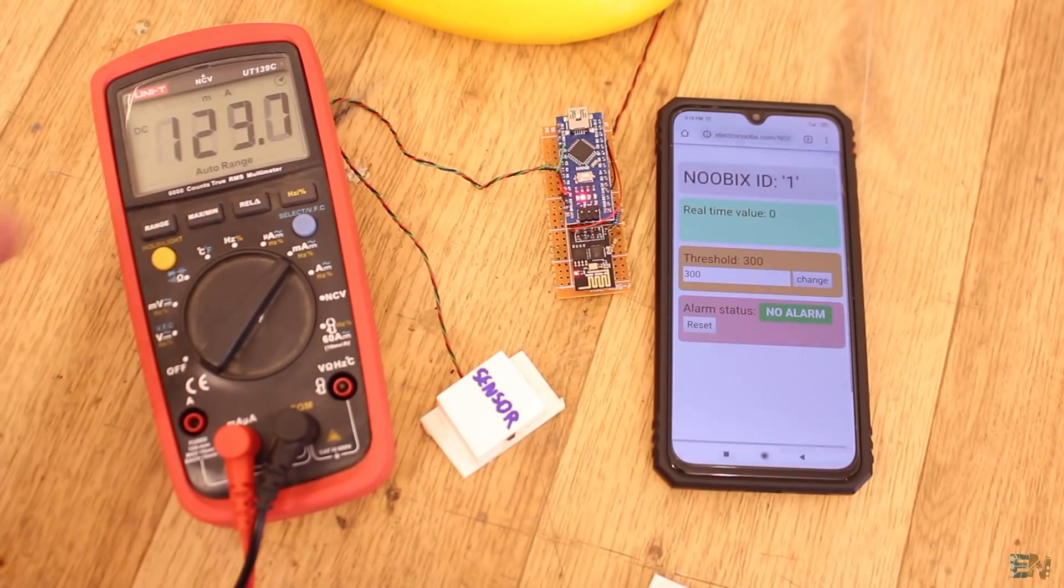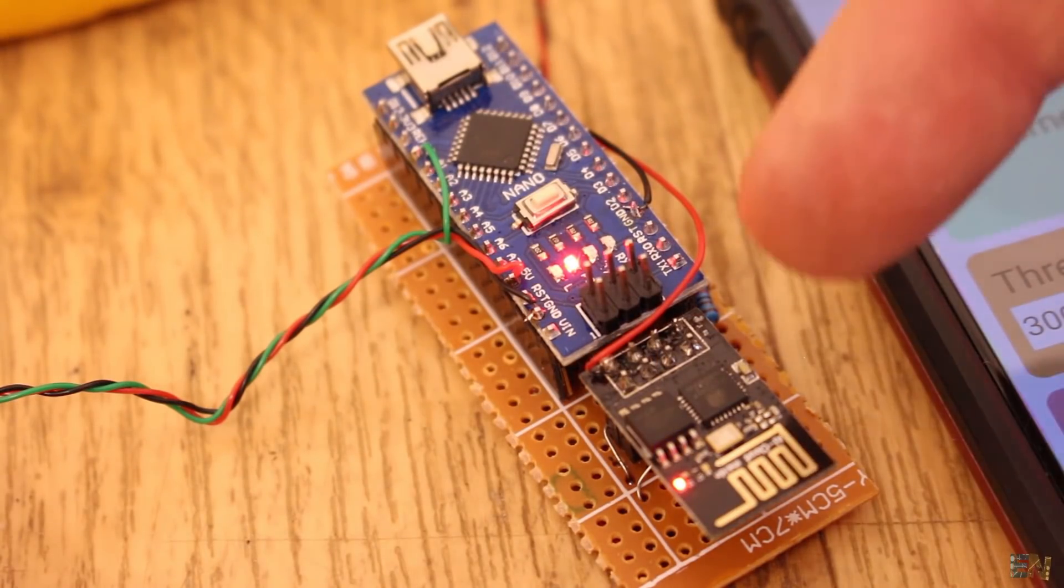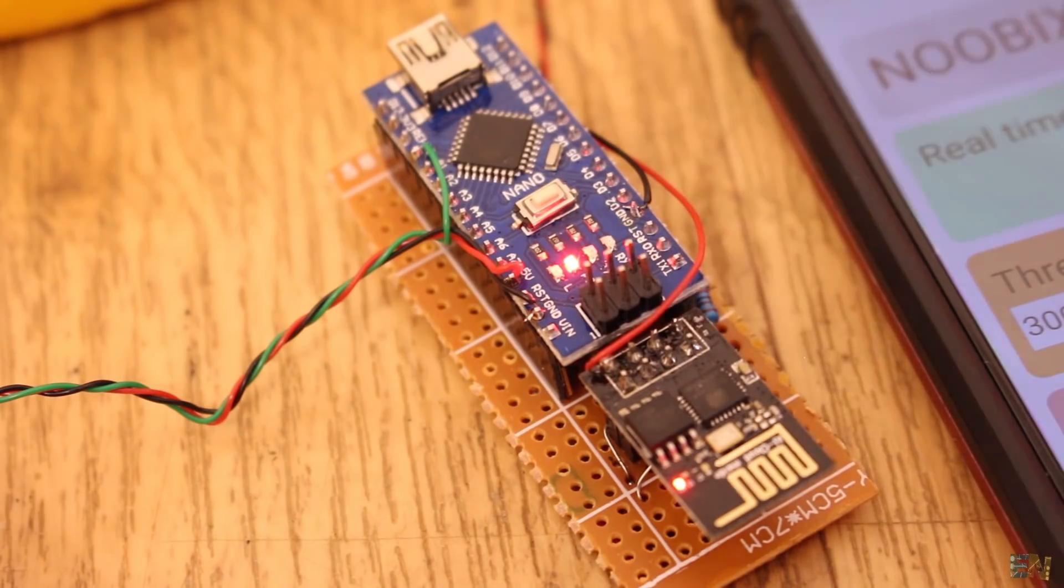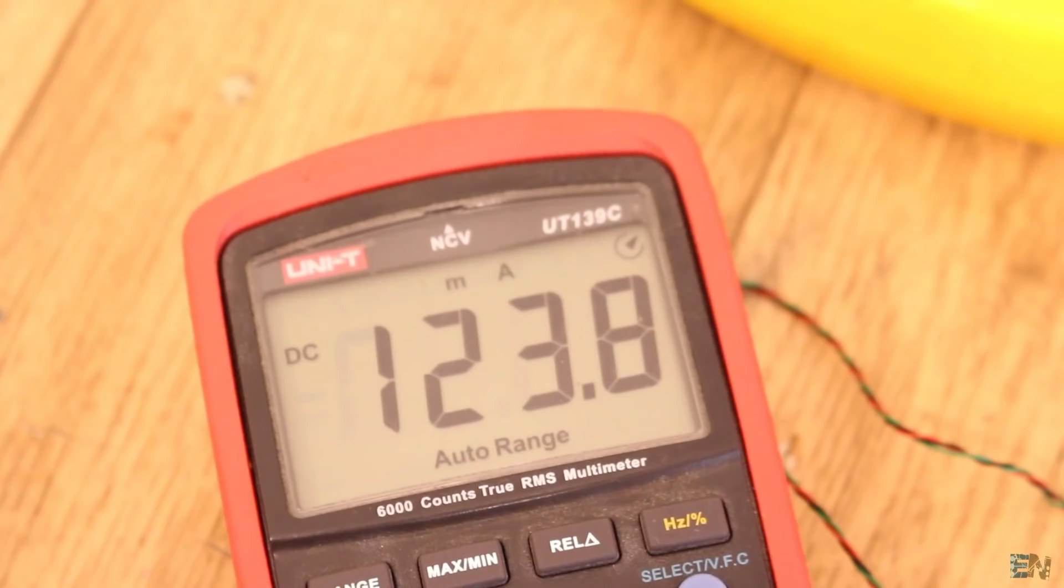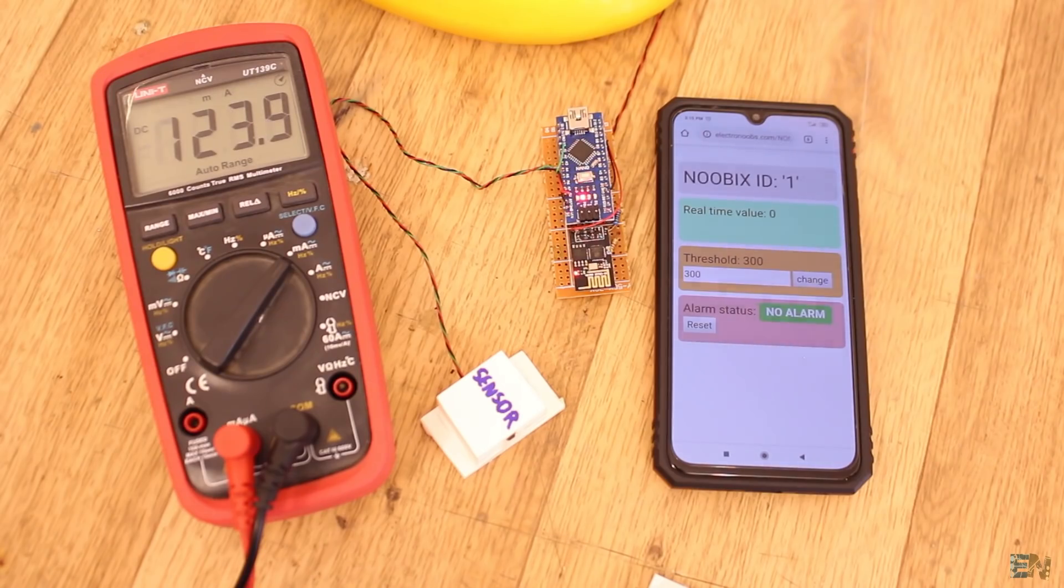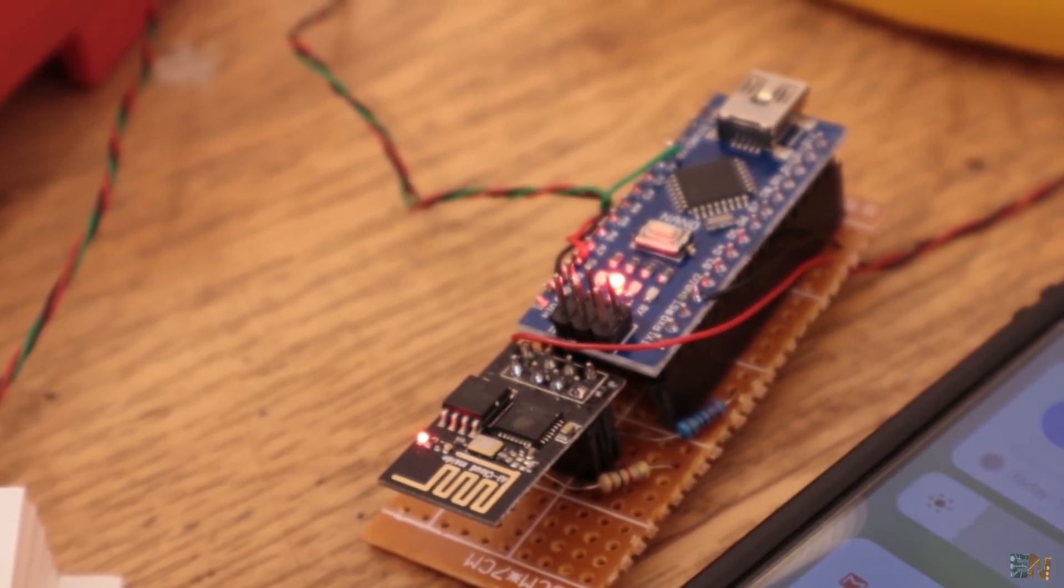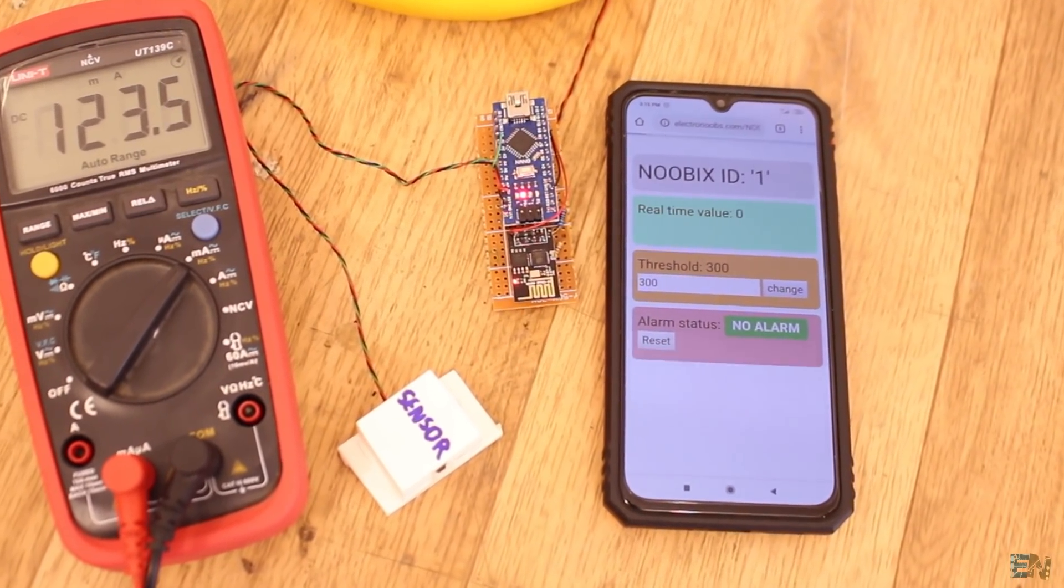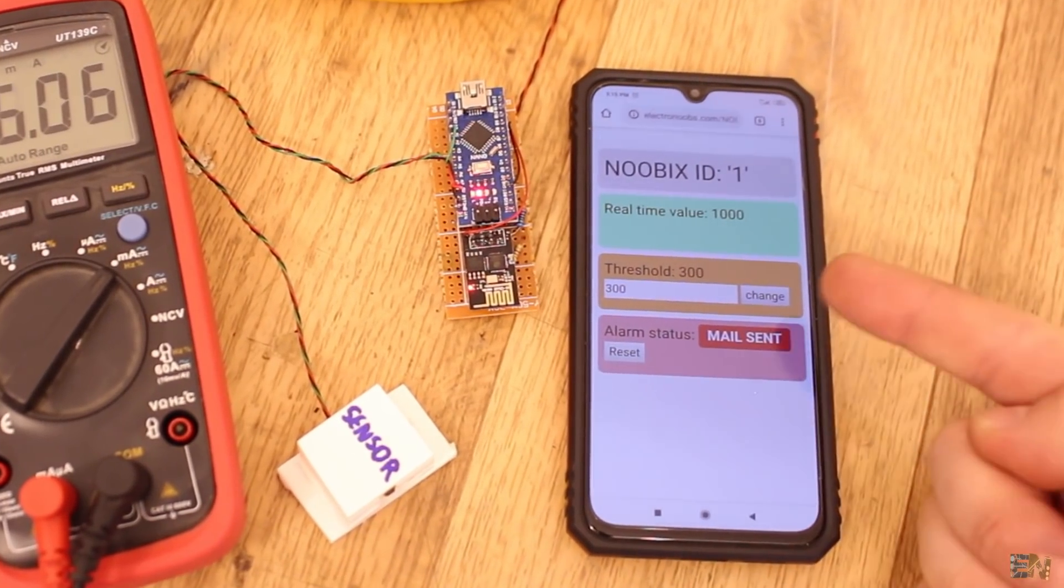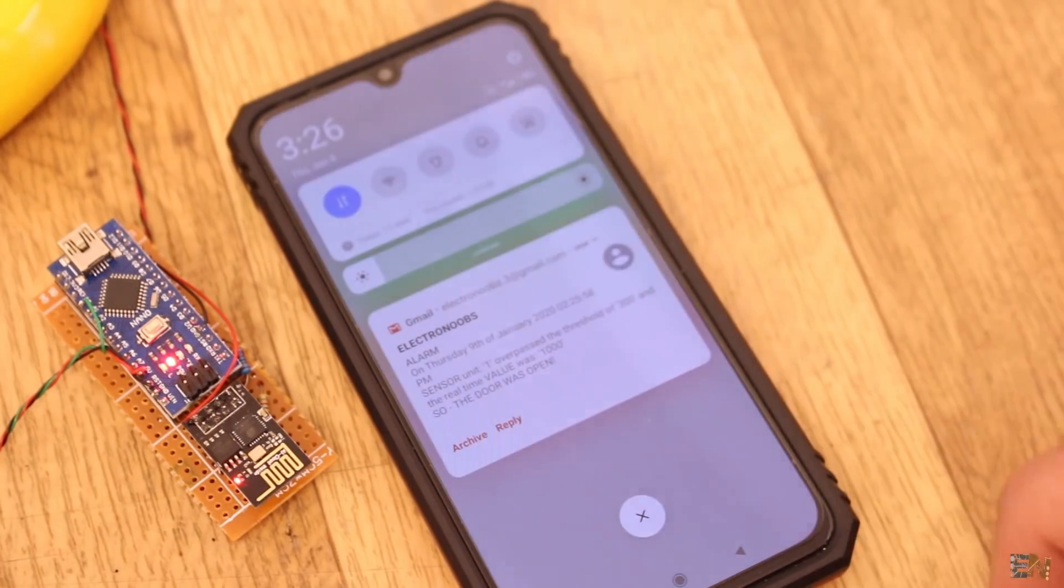When I remove the magnet, the Arduino and ESP will get out of sleep mode and the power consumption is now higher with a current value of 120 mA. This method is a little bit slower than the other one because the ESP must reset itself each time it gets out of deep sleep. But after a while, I get the real value to 1000 and the alarm was triggered and a new email was sent to me. If I scroll down, I can see the email.